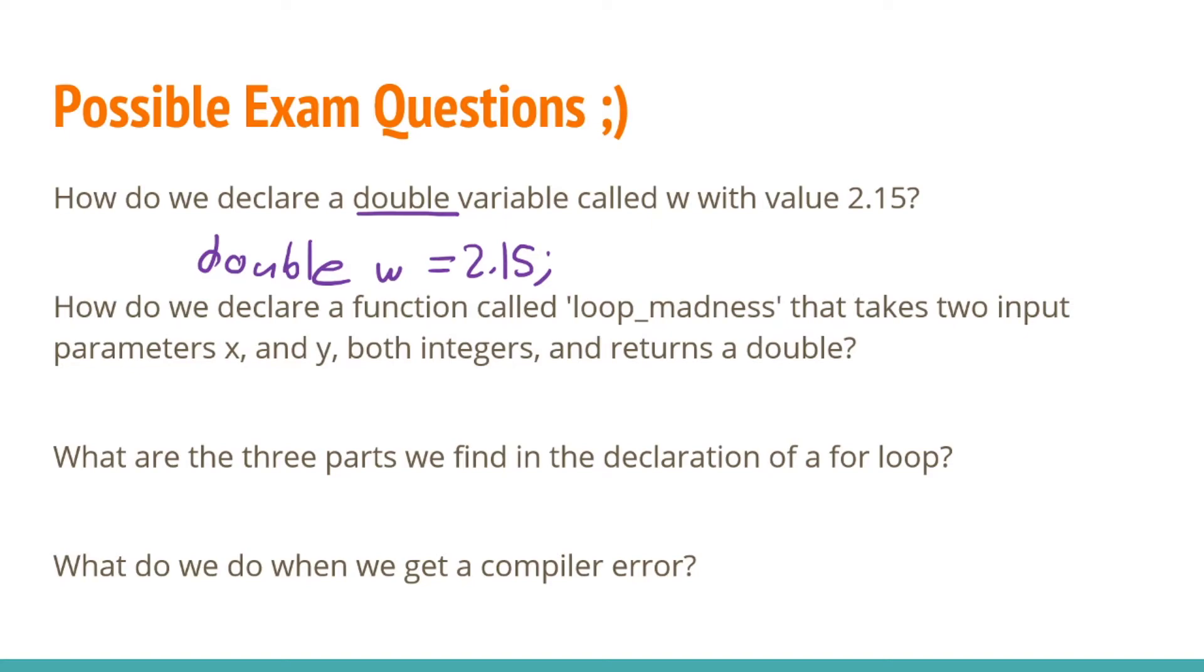How do we declare a function called loopmadness that takes in two input parameters, x and y, which are both integers, and returns a double? This is not asking you to write out the function, because we don't know what this function does. What does it do with x and y and how does it convert it into a double? But it does say we just need to declare this function.